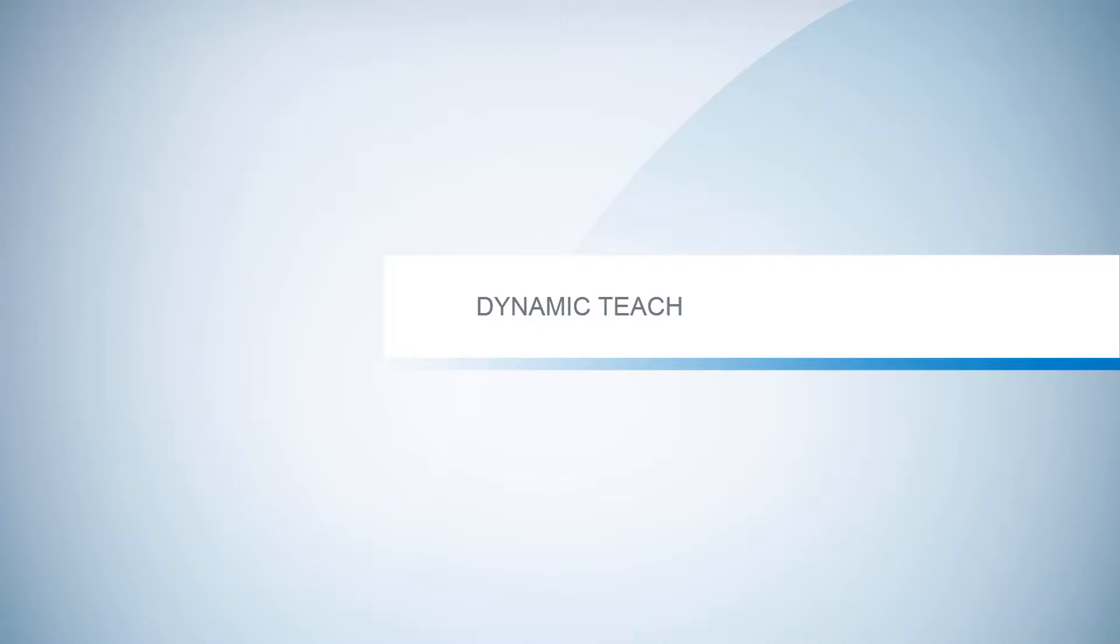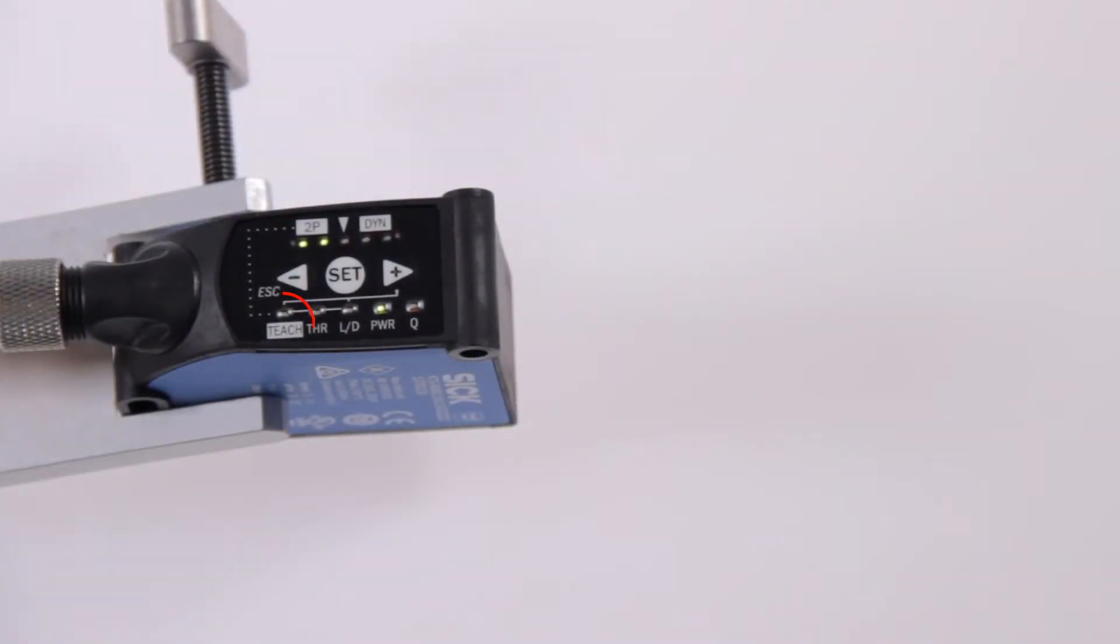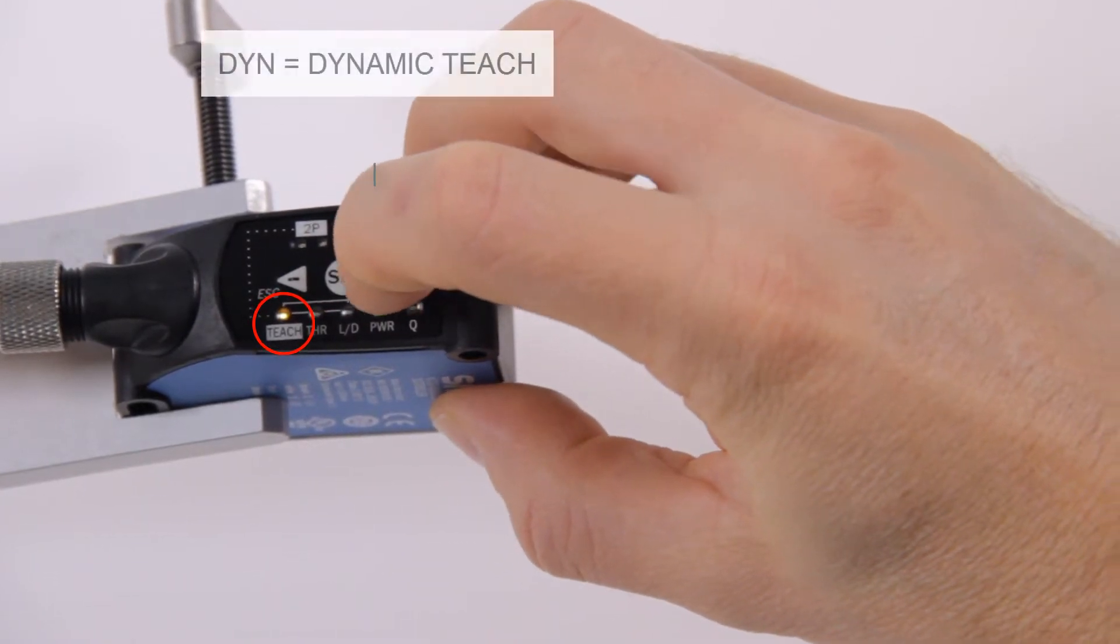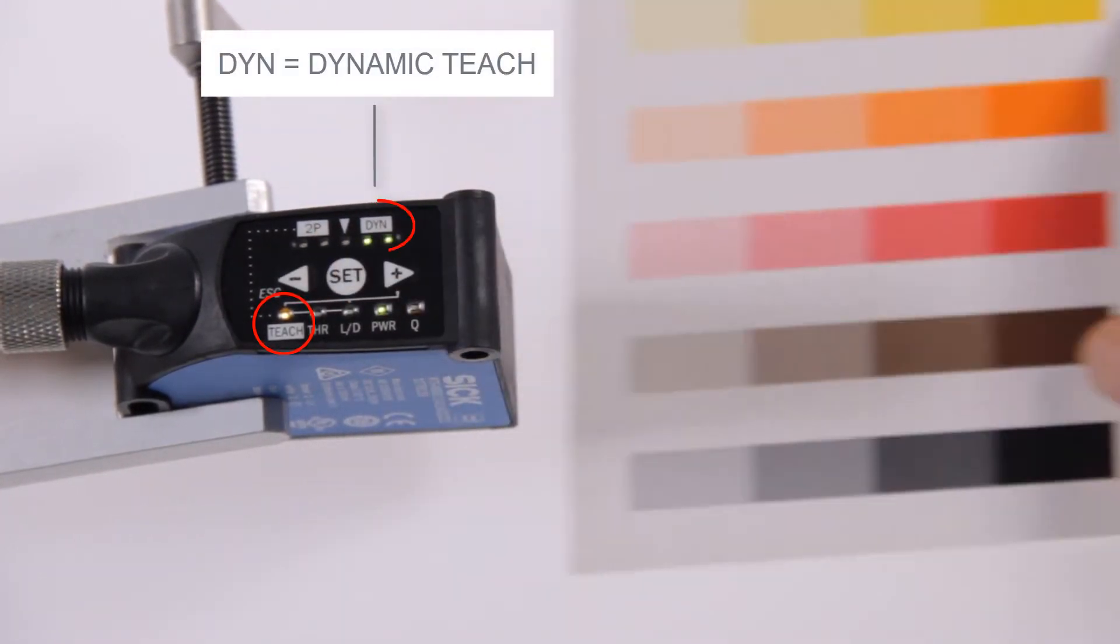Dynamic teach. For the dynamic teach select teach again and then select DYN for dynamic teach. Move the print mark under the light spot and press SET.